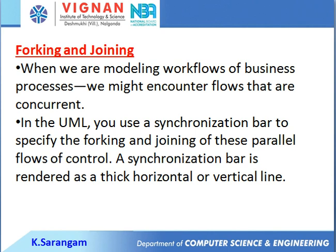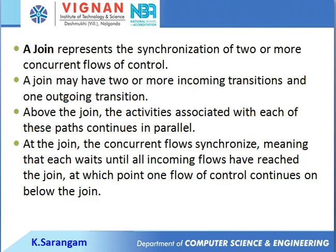When modeling business processes, you may encounter flows that are concurrent. In UML, you use a synchronization bar to specify the forking and joining of parallel flows of control. A synchronization bar is rendered as a thin horizontal or vertical line. A join represents the synchronization of two or more concurrent flows of control — it may have two or more incoming transitions and one outgoing transition.